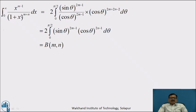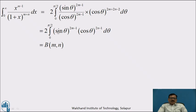Therefore, the integral from 0 to ∞ equals twice the integral from 0 to π/2. Writing tan in terms of sin and cosine, we get 2∫₀^(π/2) sin^(2m−1)θ / cos^(2m−1)θ · cos^(2m+2n−2)θ dθ. Simplifying, this gives 2∫₀^(π/2) sin^(2m−1)θ · cos^(2n−1)θ dθ, which is the trigonometric (second) form of the beta function, equal to β(m, n). Therefore β(m, n) = ∫₀^∞ x^(m−1) / (1+x)^(m+n) dx.